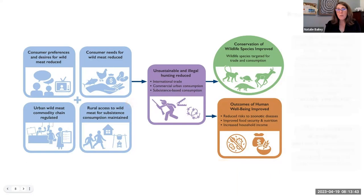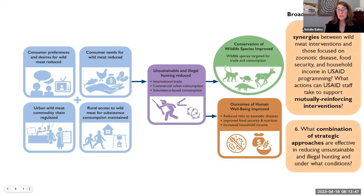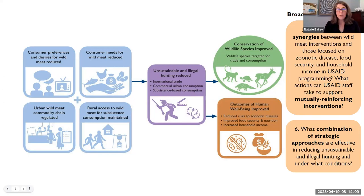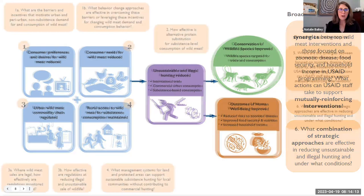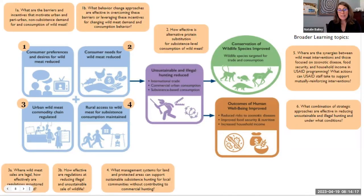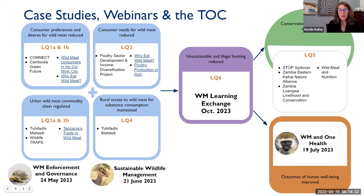We have two questions at a broader level. Question five concerns the synergies between wild meat programs and those focused on zoonotic disease, food security, and household income in USAID programming, as well as the combination of strategic approaches that will help reduce unsustainable and illegal hunting. All of these have an 'under what conditions' addendum. On the next slide, you'll see all of these mapped to our theory of change along with our case studies, former and upcoming webinars. For question six, we're really leading up to our in-person event — what is that combination of strategic approaches we need to make a difference on these issues?